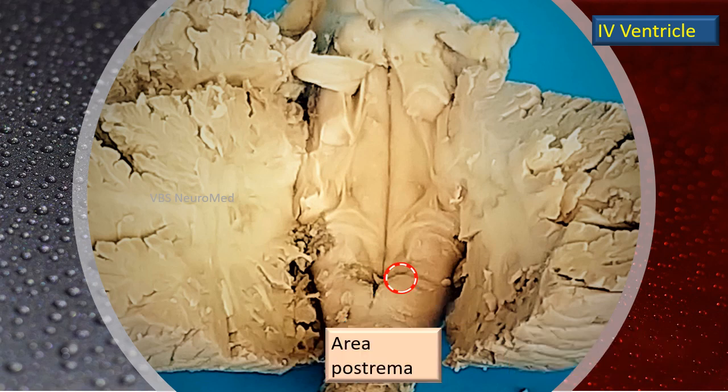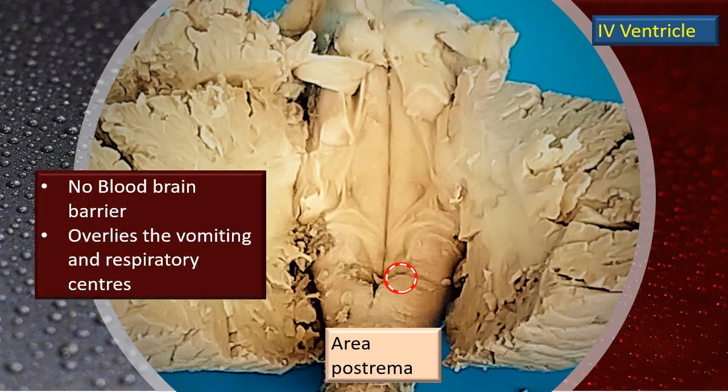There is another important area, generally not very well seen, located inferolateral to the vagal triangle — called the area postrema. Although not always clearly visible, it is emphasized in all discussions because the area postrema does not have a blood-brain barrier. Additionally, two important centers — the vomiting center and the respiratory center — are located deep to it.